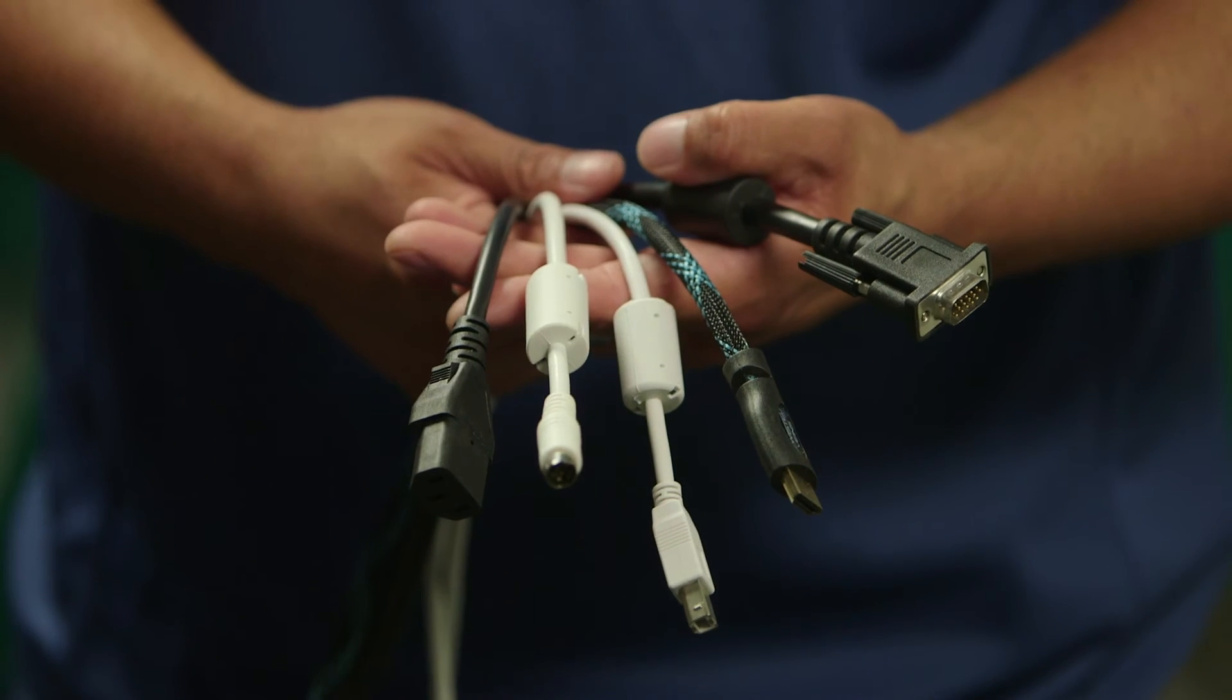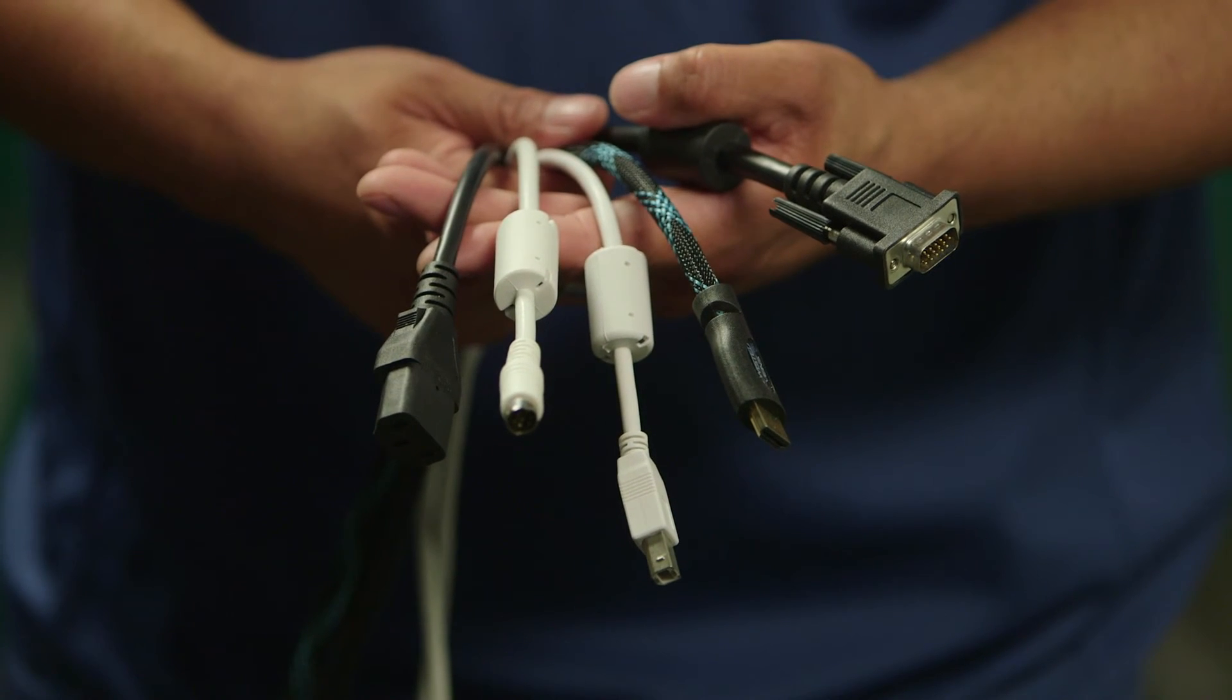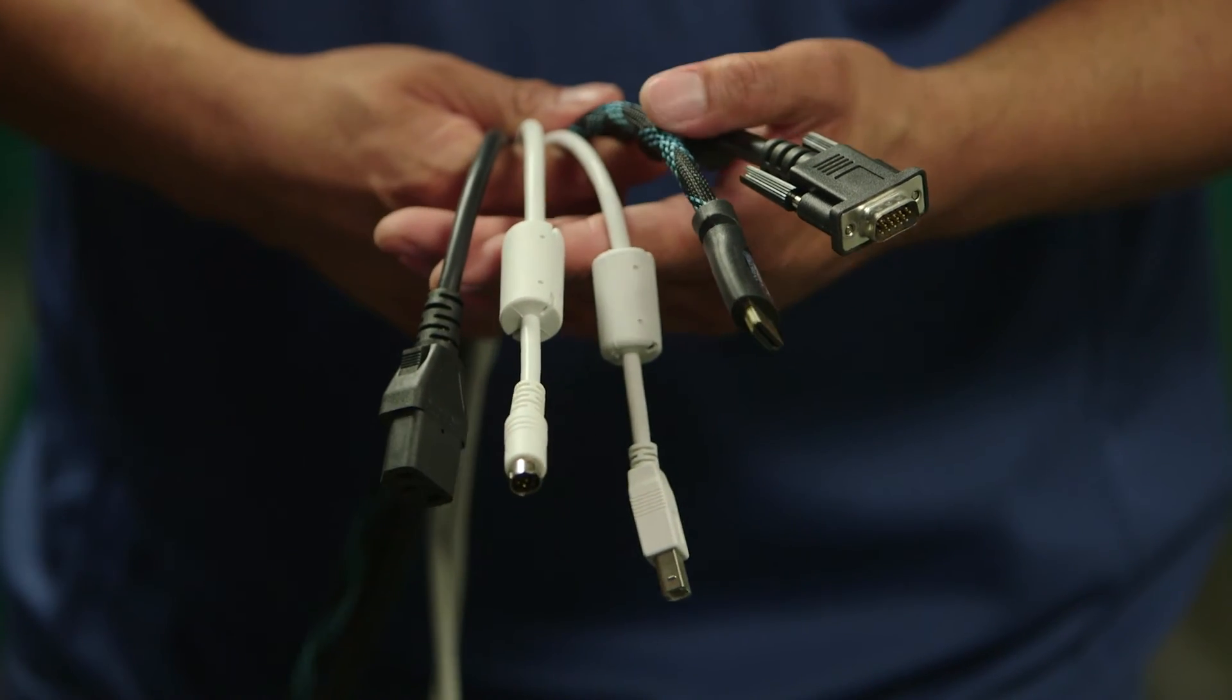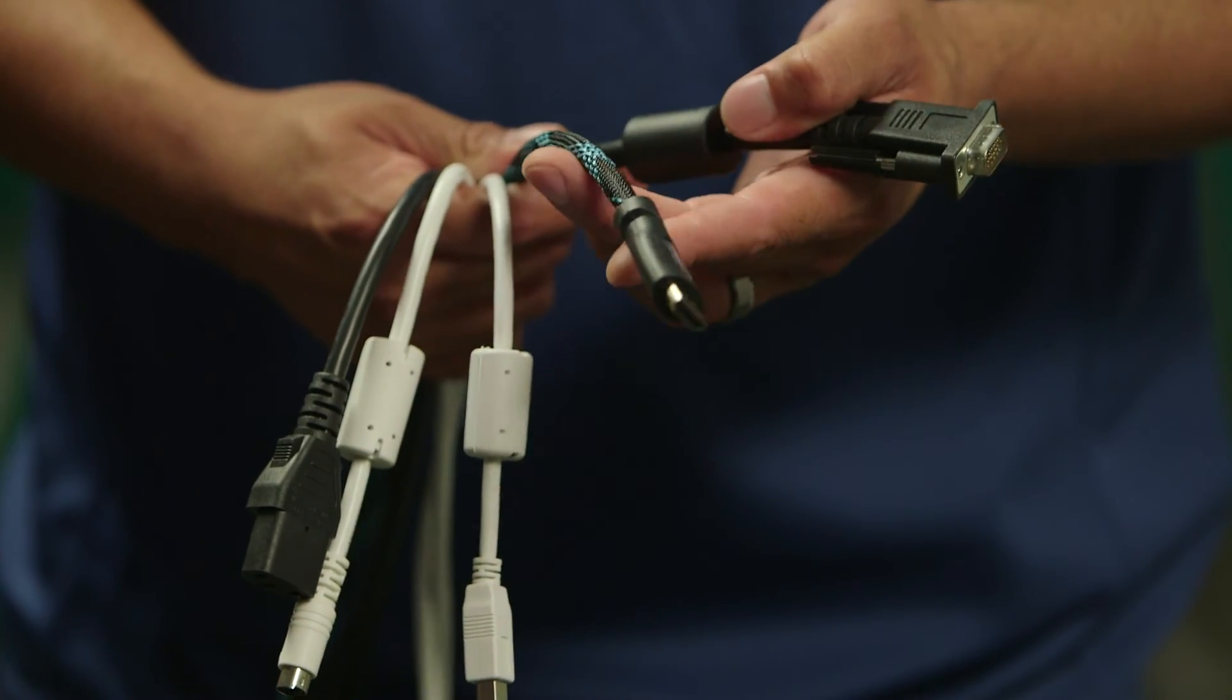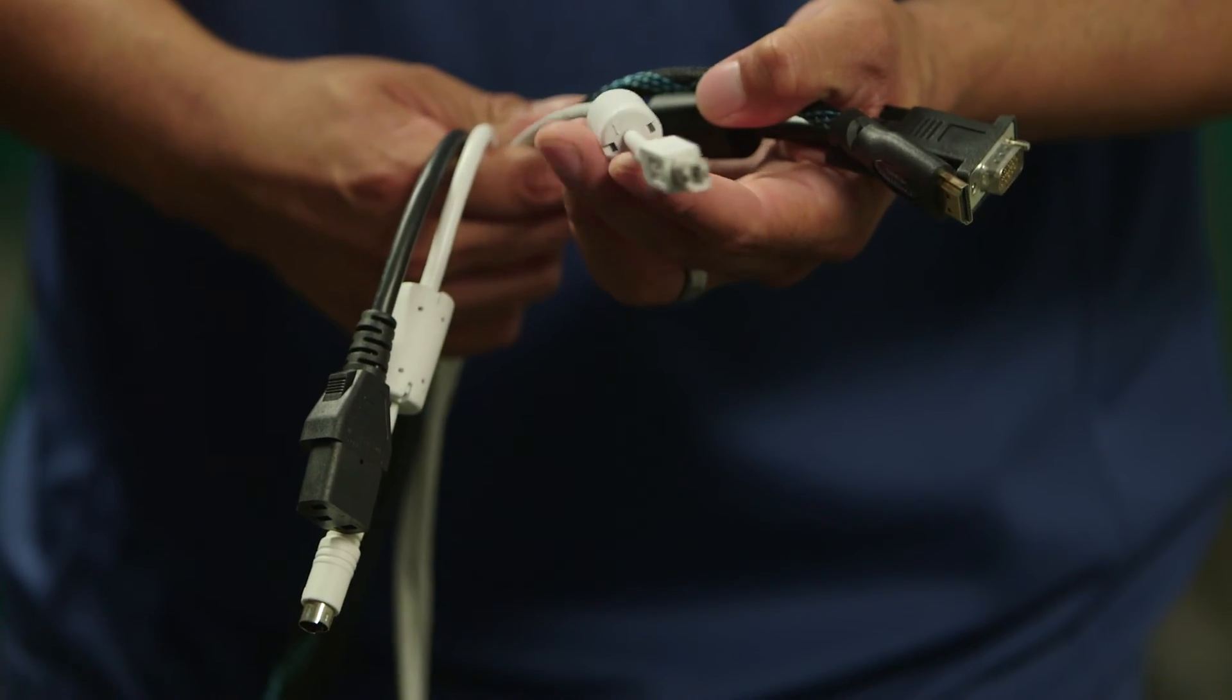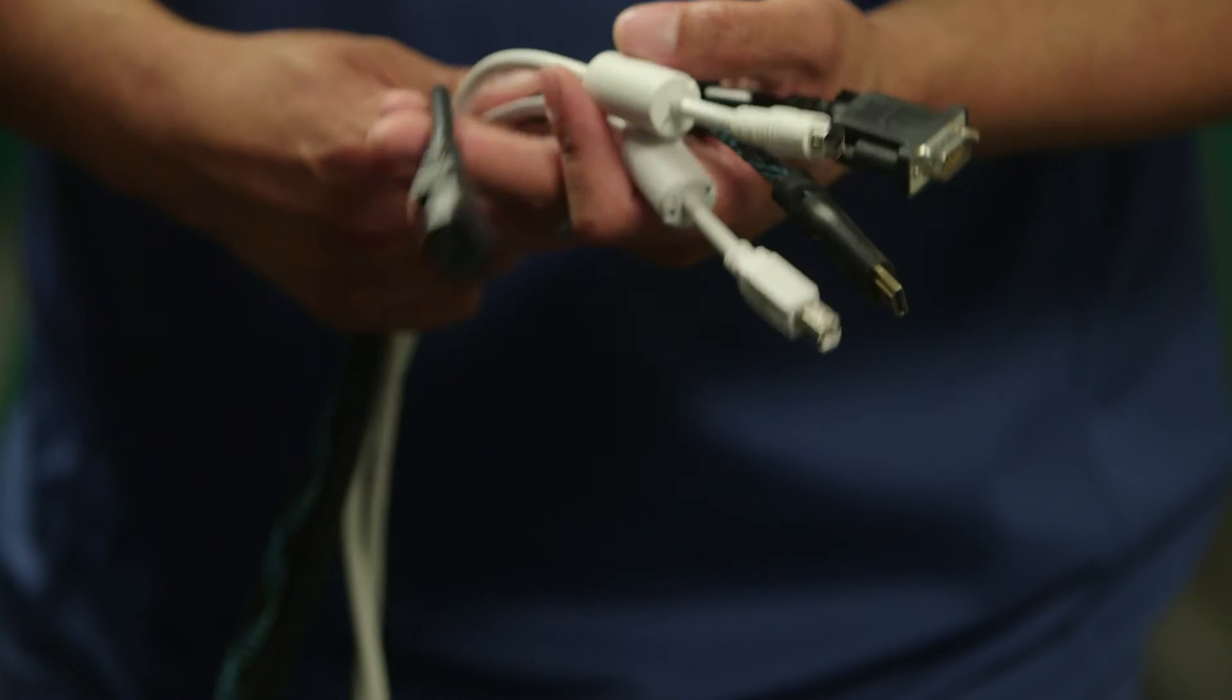Once the plate is attached, we will run cables through the mount arm. Make sure you have all cables required for the install, including the VGA, HDMI, USB, the finger touch cable, and finally the power cable.